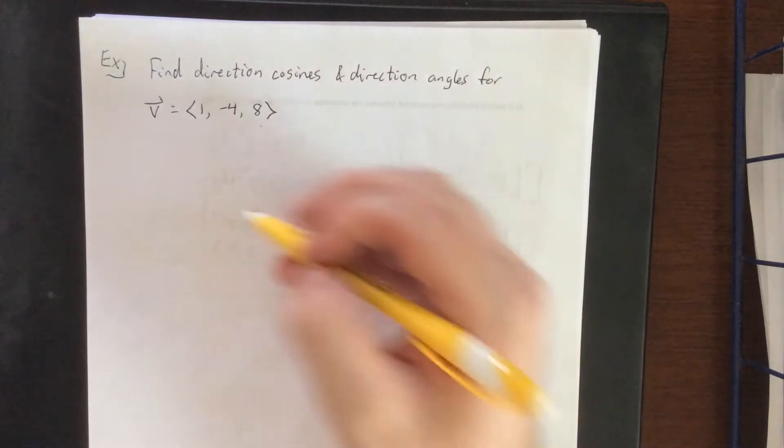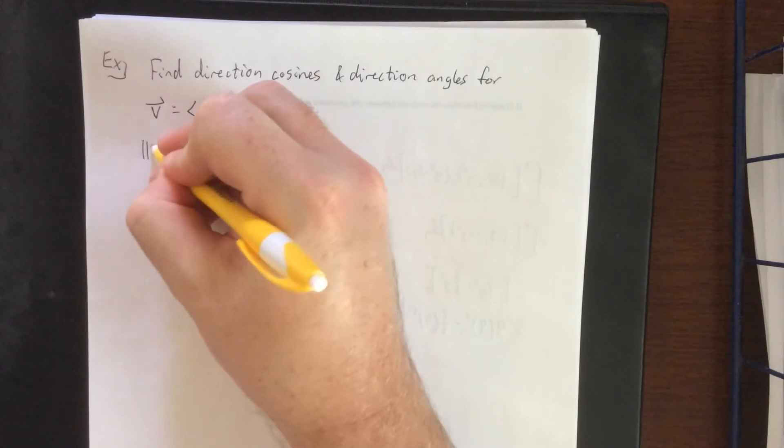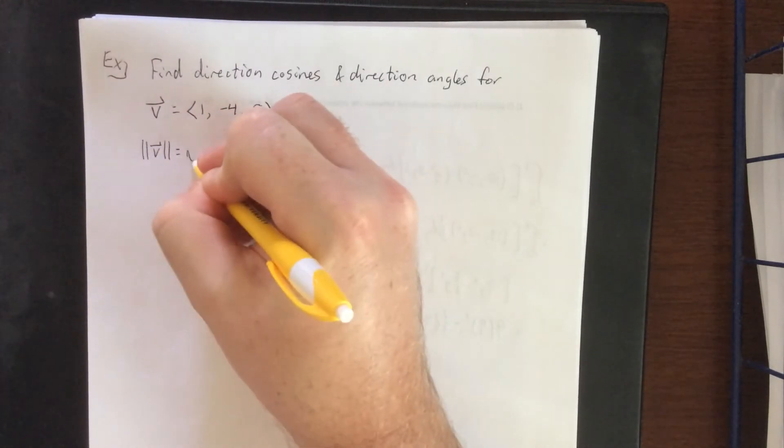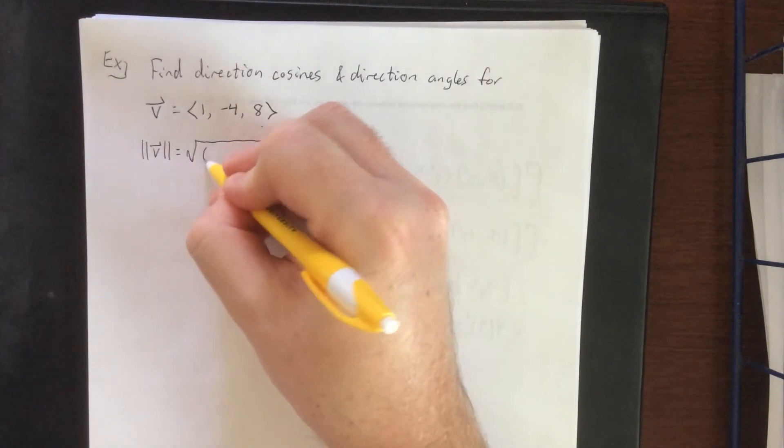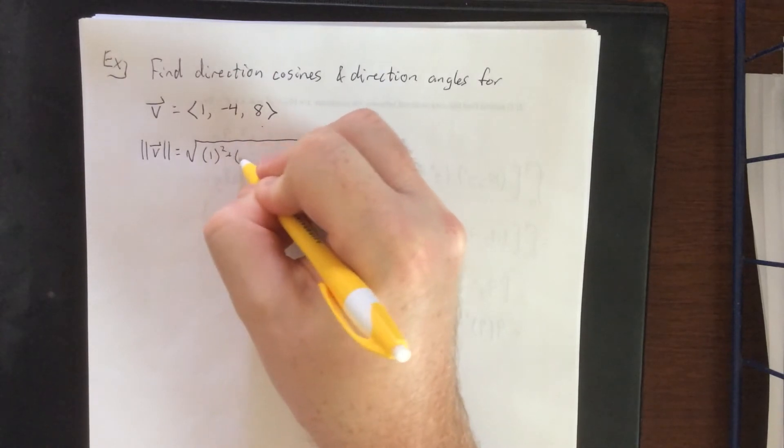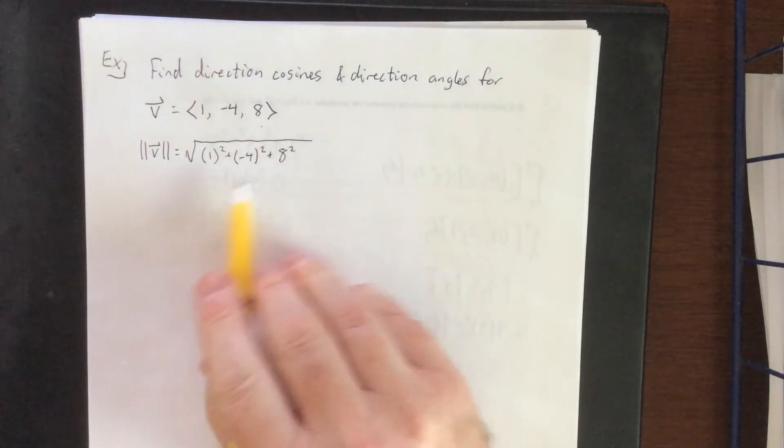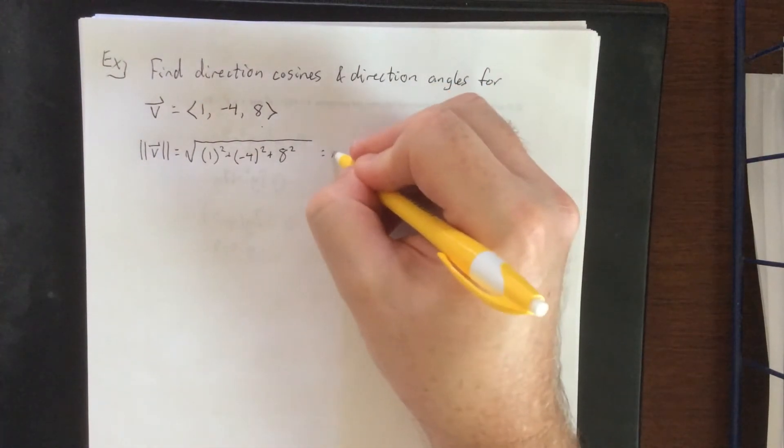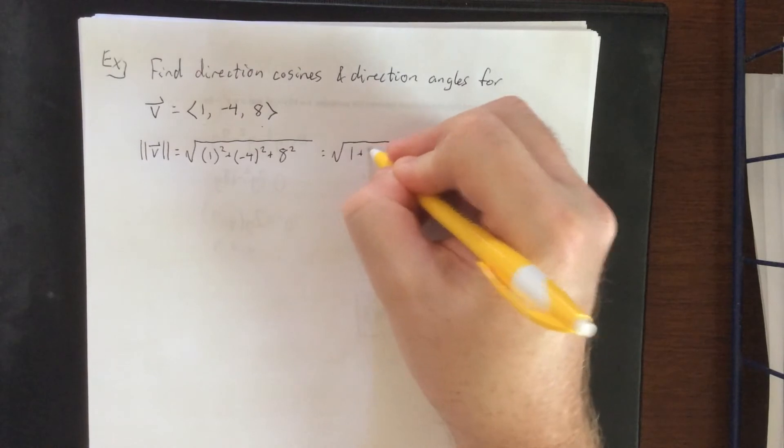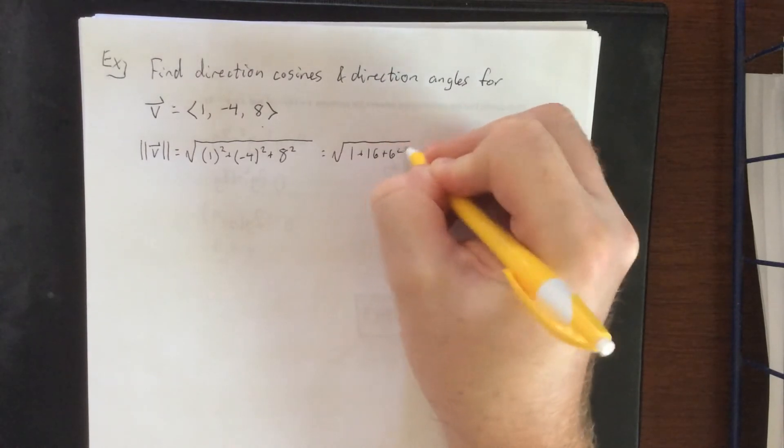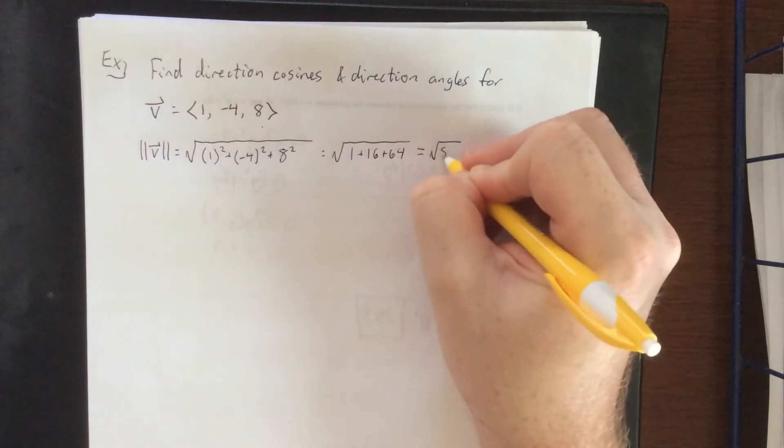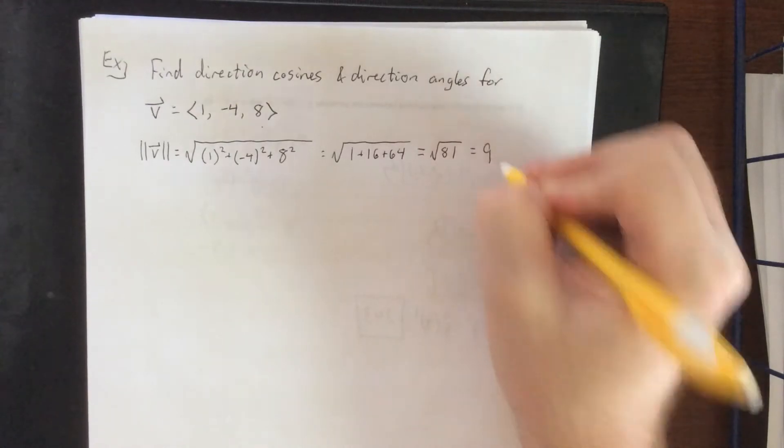In order to get all of these things, the first thing we'll need is the magnitude of v. I made this one so that the magnitude works out pretty nicely. We'll take 1 squared plus negative 4 squared plus 8 squared, which is 1 plus 16 plus 64. Oh, nailed it! Square root of 81 gives us 9.